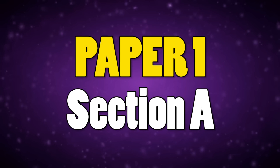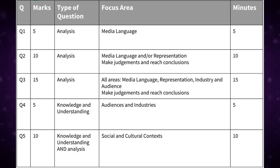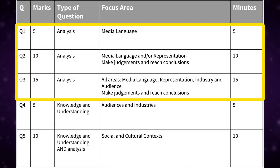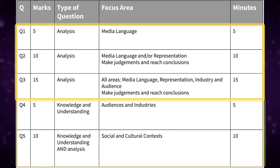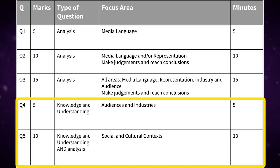Section A of Paper 1 consists of five questions. The first three directly relate to the clip that you will be shown in the exam. The final two will focus more on wider issues relating to the TV programs around industry, audience and context.